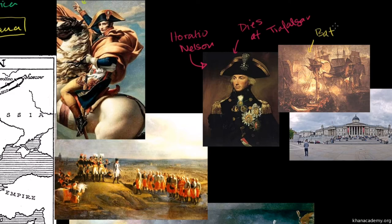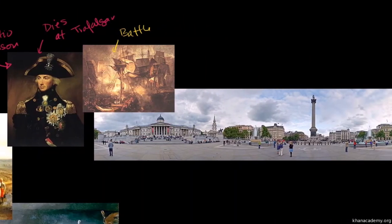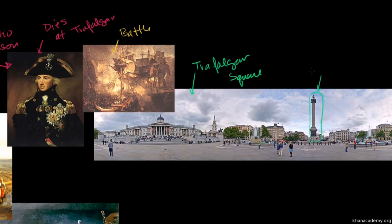This really established British domination of the seas — the French Navy was the only navy that could compete on any level, and destroying them at Trafalgar cemented British naval supremacy. This is actually an image of the Battle of Trafalgar — a bunch of ships shooting at each other. To connect that to modern London, Trafalgar Square is named after the Battle of Trafalgar. If you go there, you will see Nelson's Column, named after Horatio Nelson, with a figure of Nelson himself at the very top.